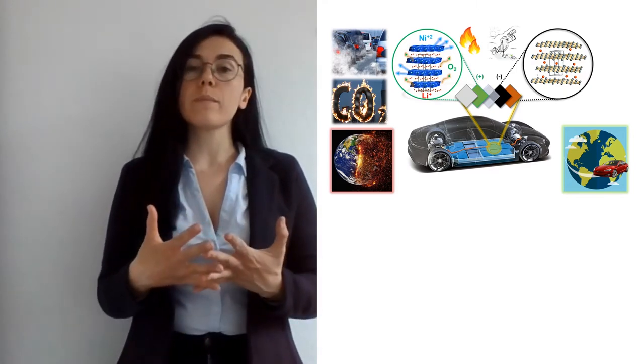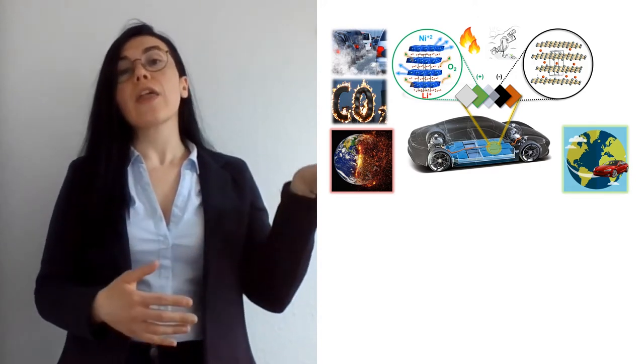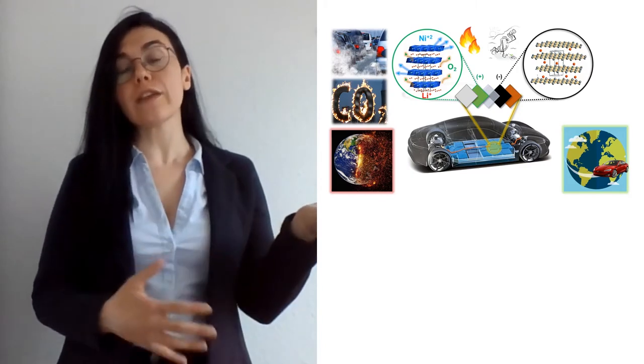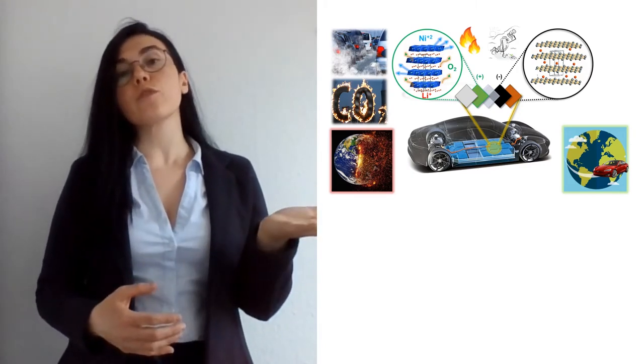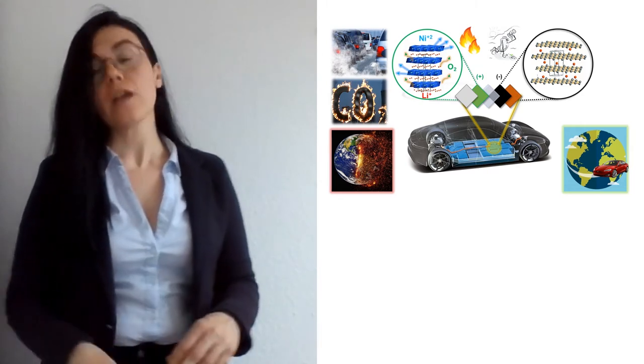In a typical lithium ion battery, we have the positive electrode or the cathode where the lithium ions are coming from. So source of the lithium ions, therefore determining the main characteristics of the battery.